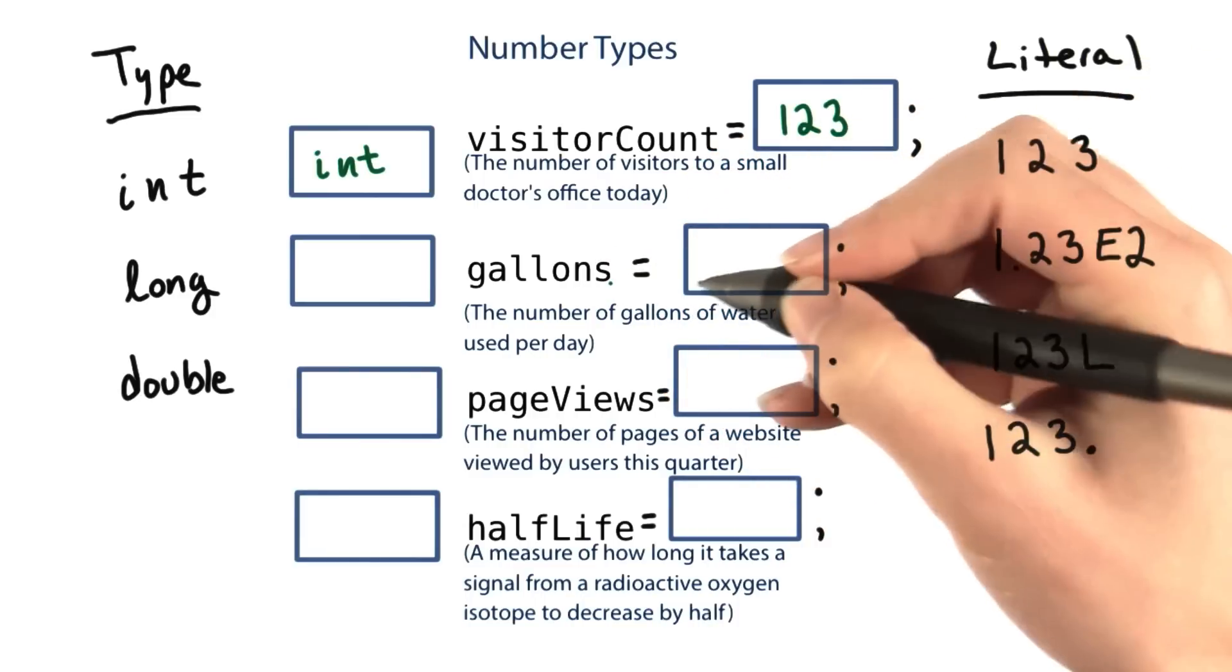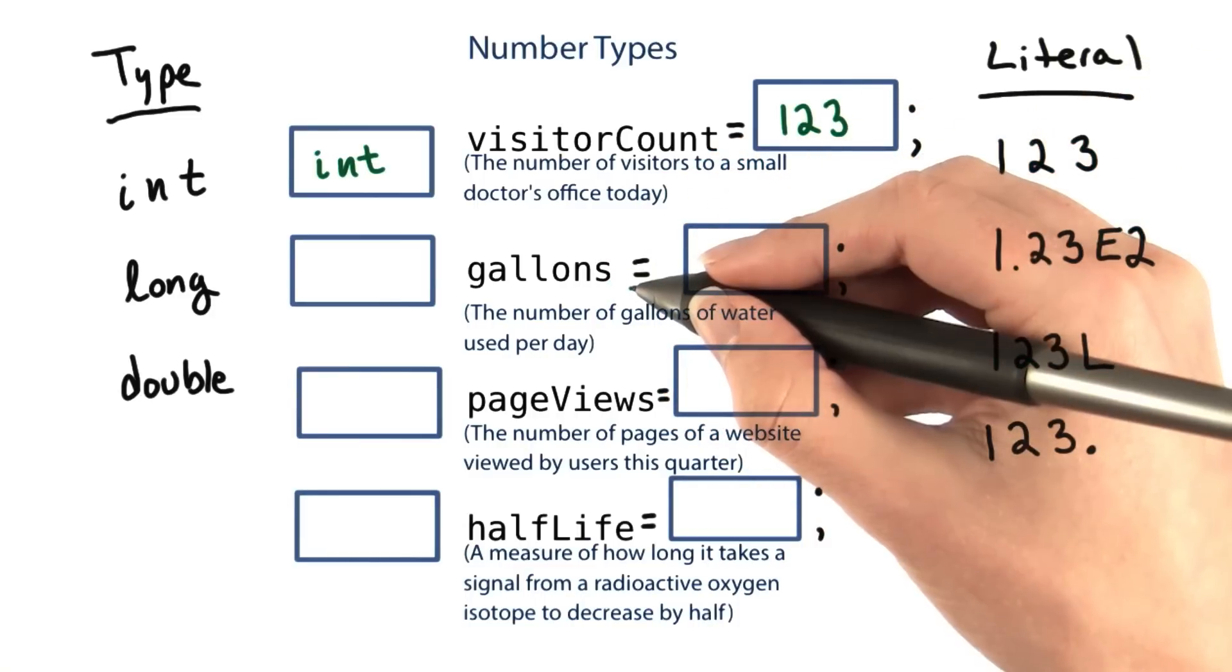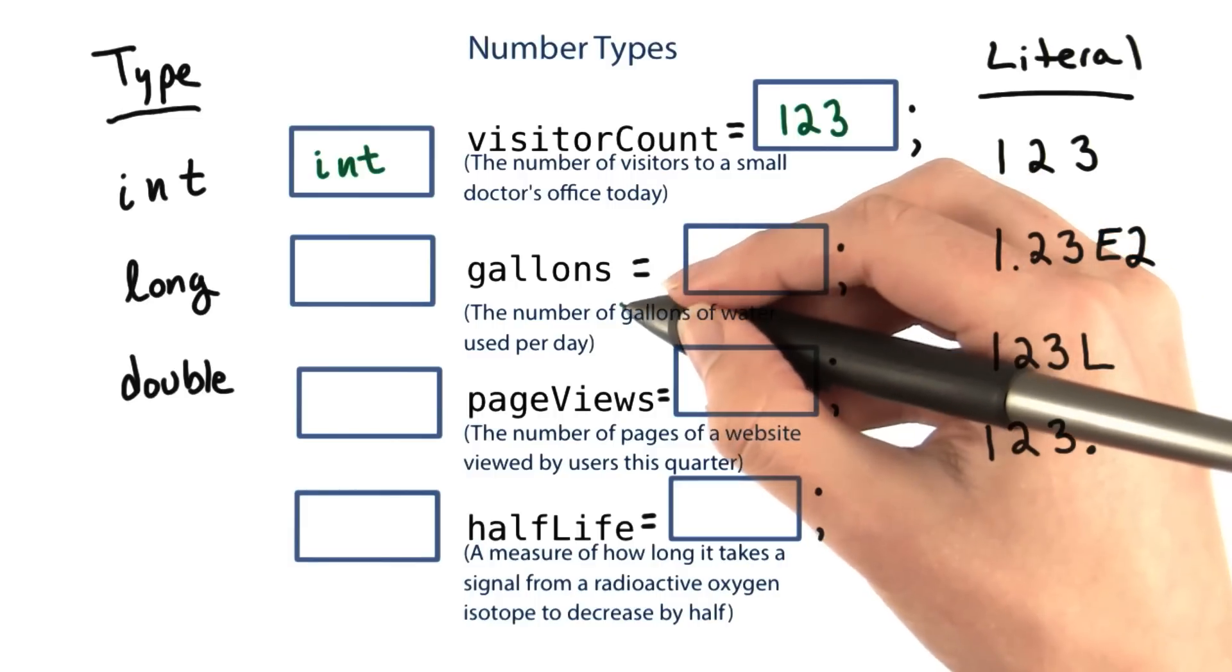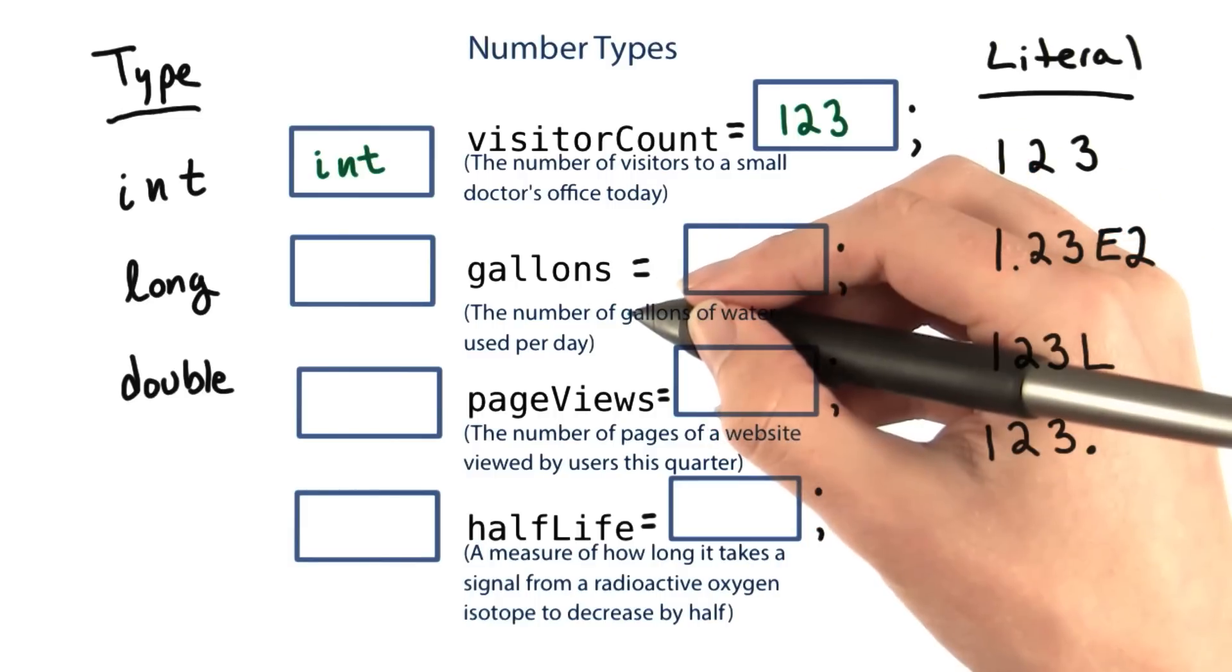The number of gallons used could be pretty much anything. We don't know what it's being used for. So it could be 2 or 2 million. It probably doesn't have to be an integer. You could have 2.5 gallons of water.